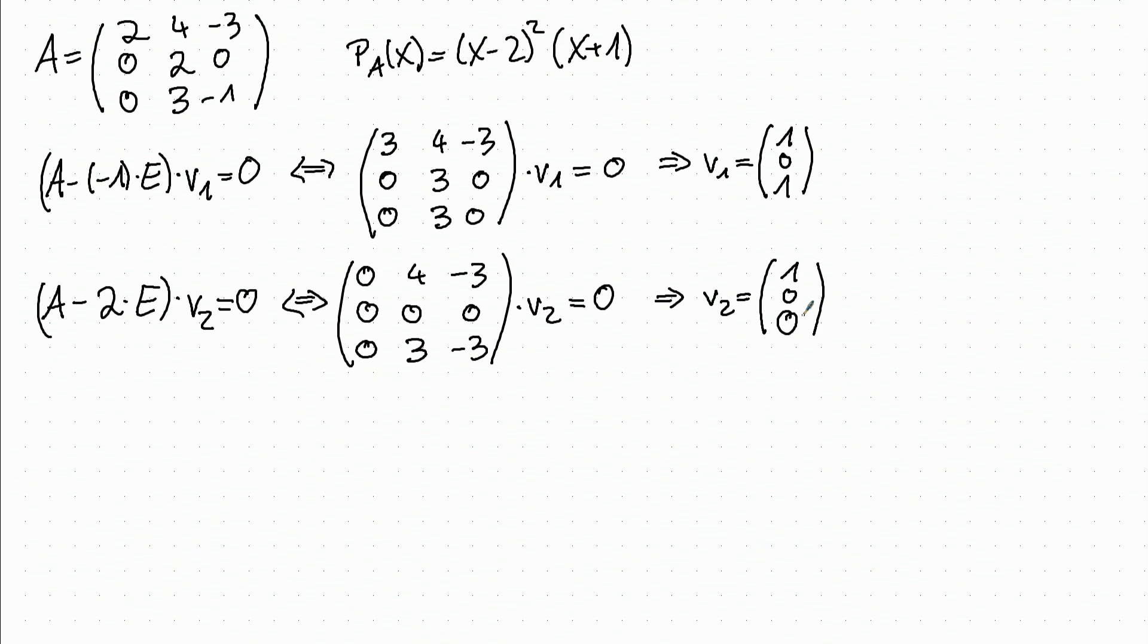Now we have to compute the next vector with the next condition, which is (A minus 2E) times V_3 equals V_2. This is equivalent to 0, 4, minus 3, 0, 0, 0, 0, 3, minus 3 times V_3 equals V_2. And we chose V_2 to be 1, 0, 0.